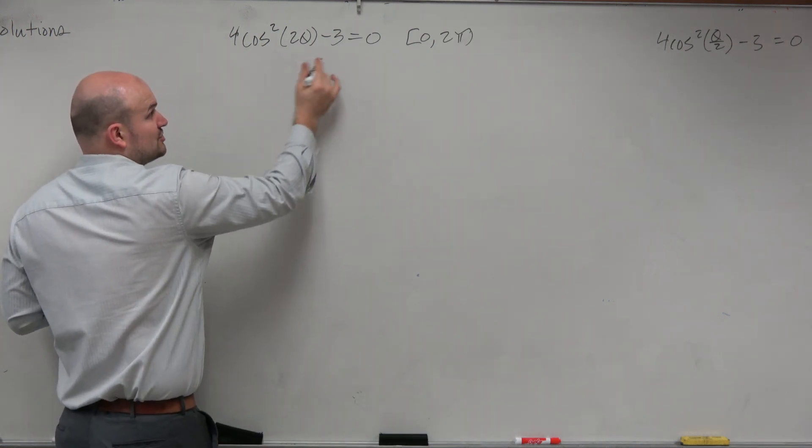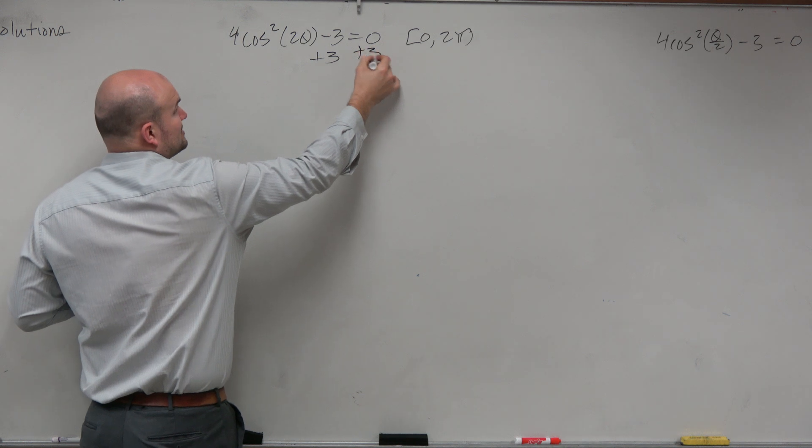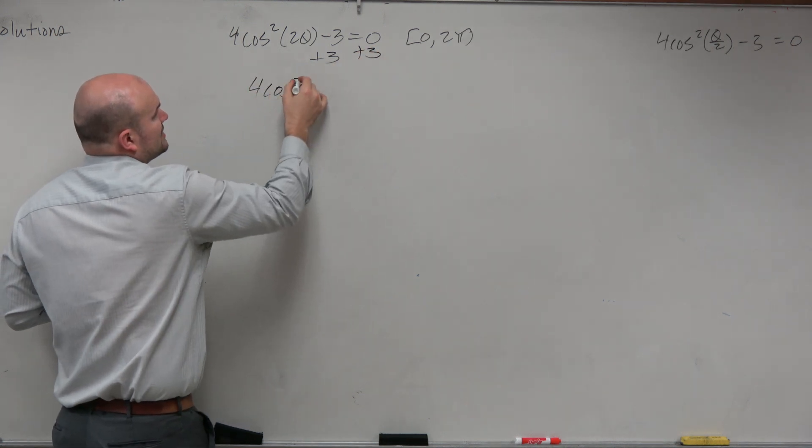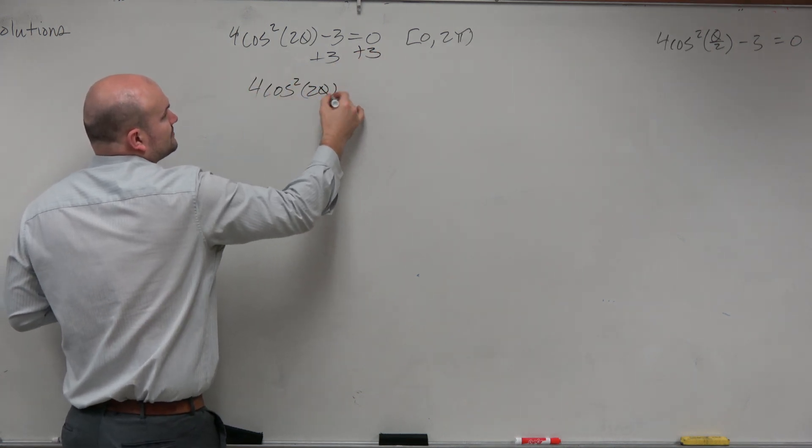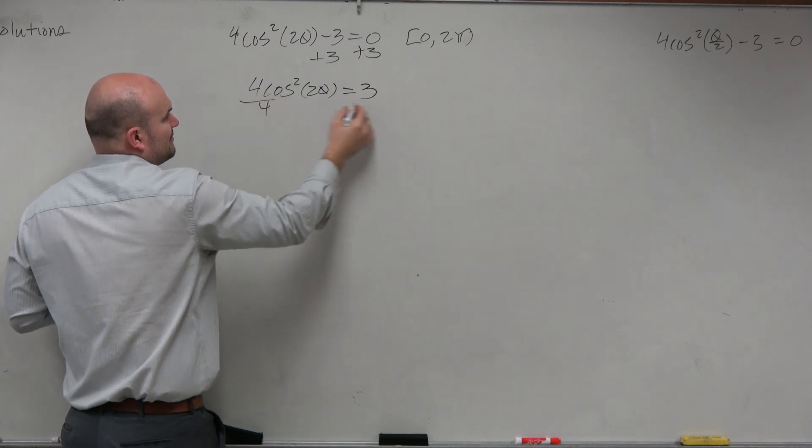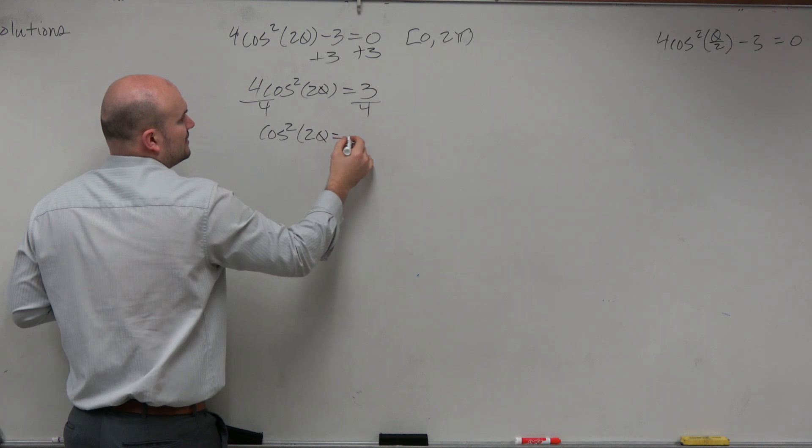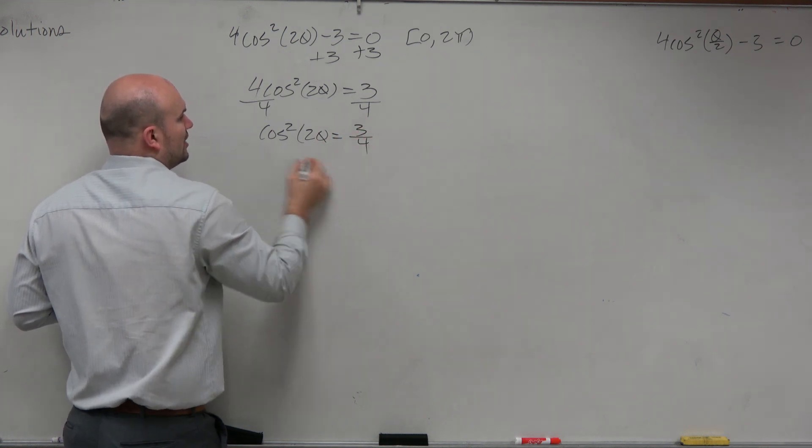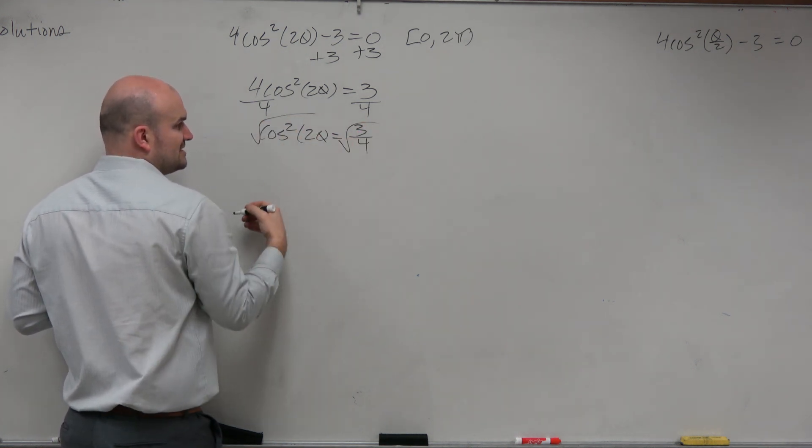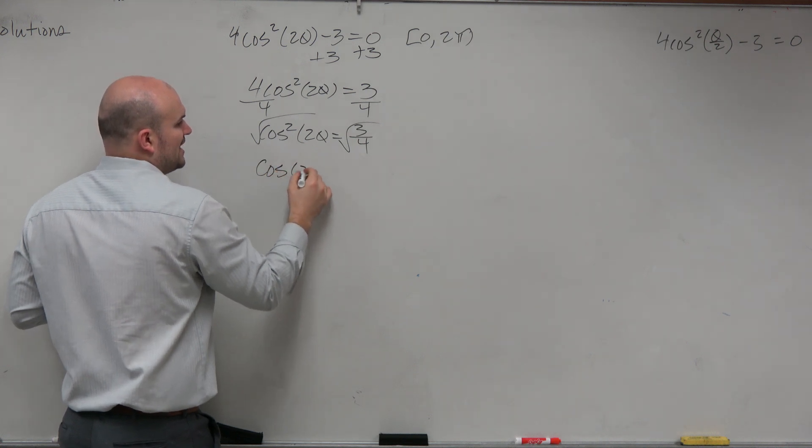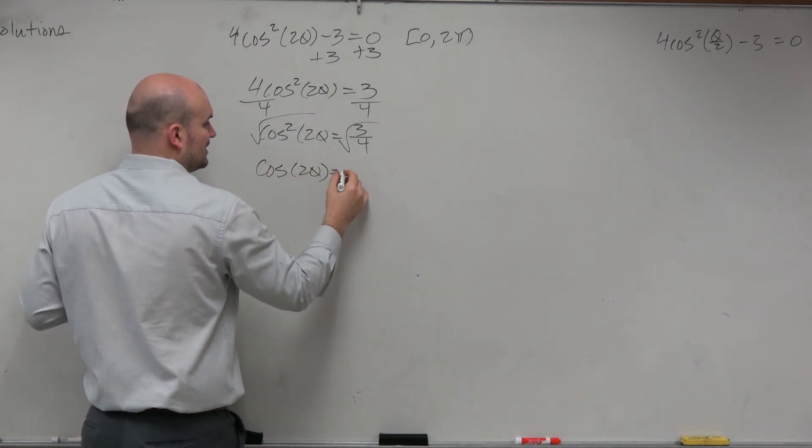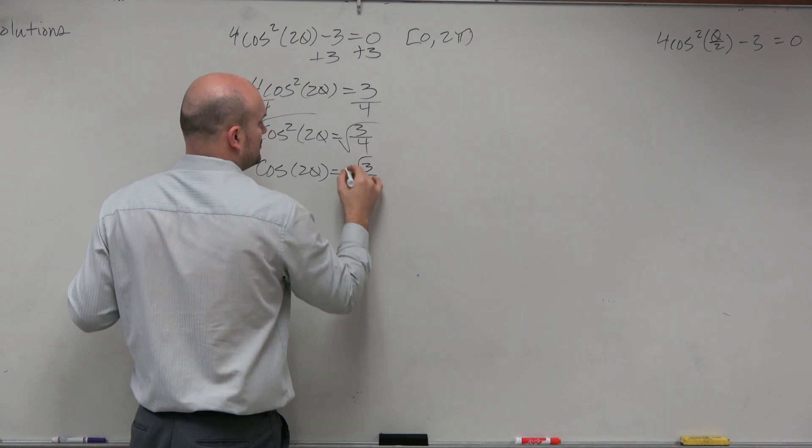First thing you want to do is just isolate the trigonometric function. So you add 3 to both sides. 4 cosine squared of 2 theta equals 3. Divide by 4. Cosine squared of 2 theta equals 3 over 4. Undo the squaring by taking the square root. Cosine of 2 theta equals square root of 3 over 2, plus or minus.